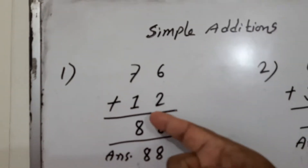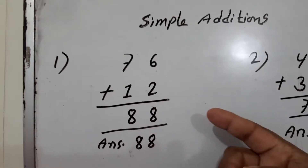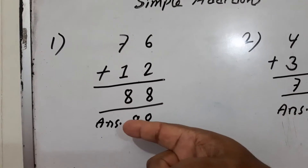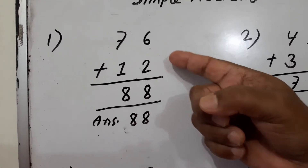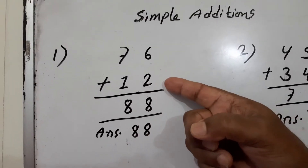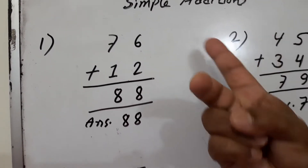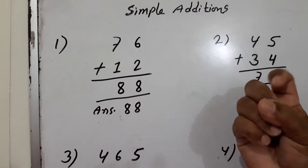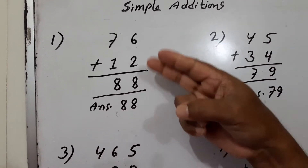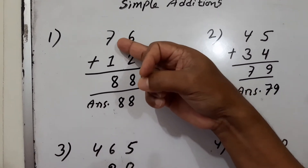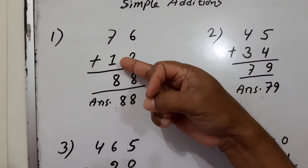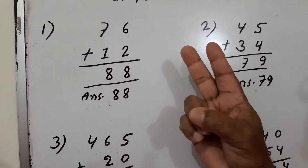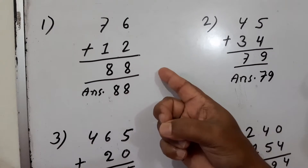76 plus 12. This is 1 digit, these are 10 digit. This is 6 and this is 2. Take 2 in hand: 6, 7, 8. This is 8. Now 7 here, take 1 in hand: 7, 1, 8. Answer is 88.